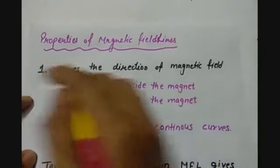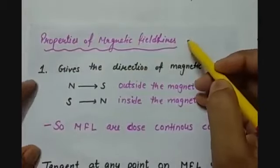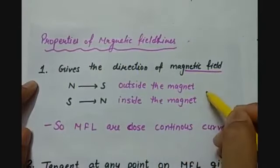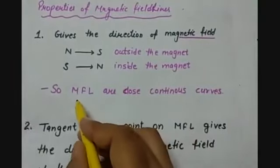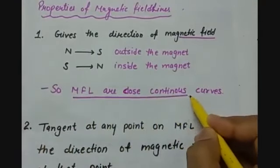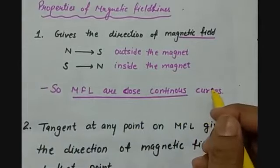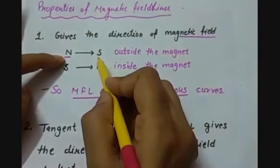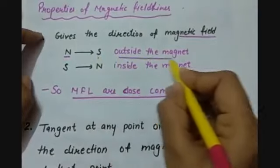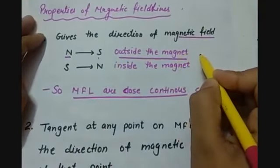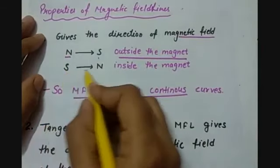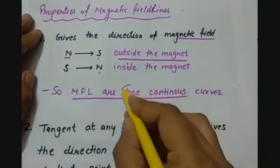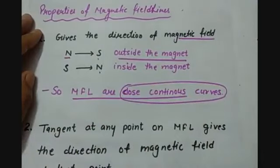Magnetic field lines are defined as the path of an imaginary independent north pole, if it were allowed to move freely in the direction of the magnetic field. Now let us study the properties of magnetic field lines. The first property is that magnetic field lines are closed continuous curves — they originate from the north pole, travel up to the south pole outside the magnet, and then travel inside the magnet from south to north. They do not end at the poles.